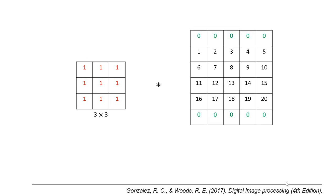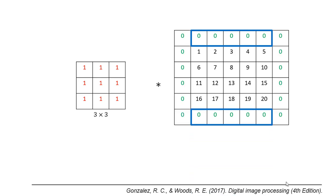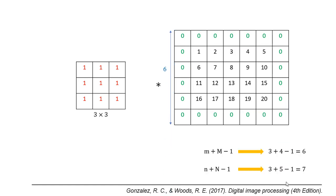In our example, we pad the image with one row of zeros at the top and bottom, and one column at left and right. Finally, we get a padded image with the size of (m + m - 1) × (n + n - 1).